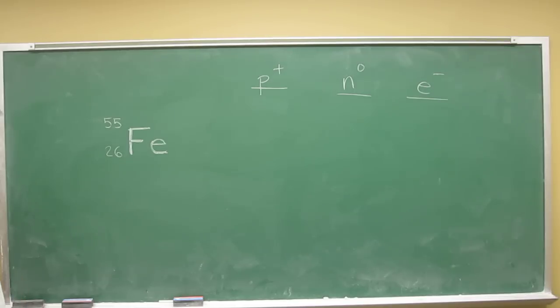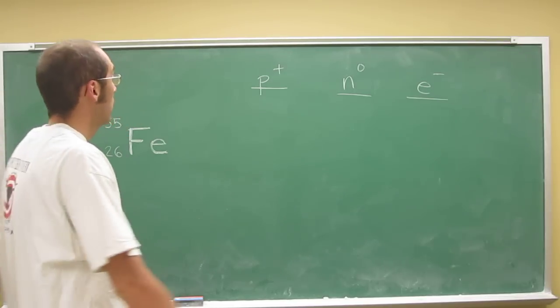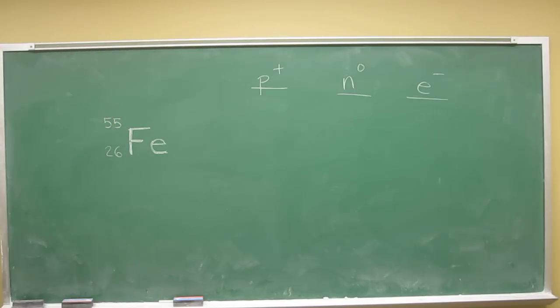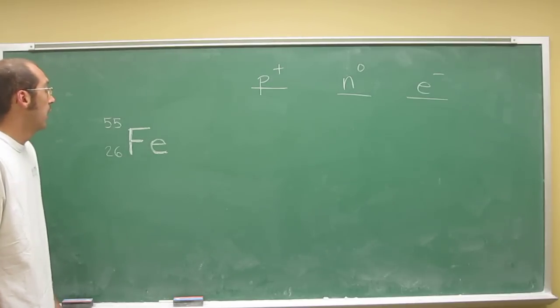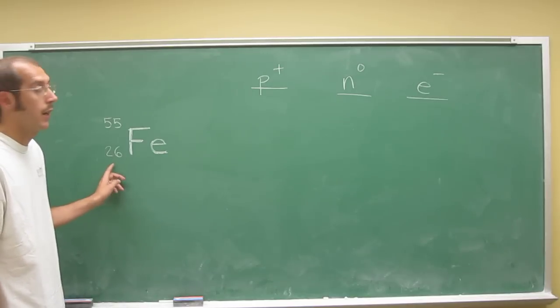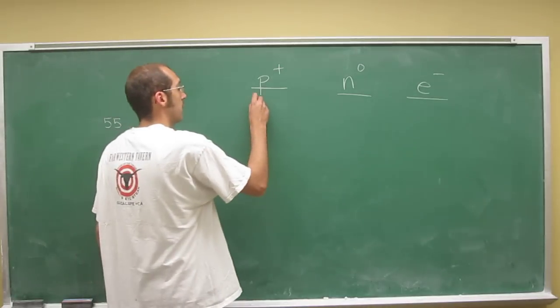But anyways, so let's calculate the number of protons, neutrons, and electrons in this element. The number of protons is the same as the atomic number, so that's going to be 26.